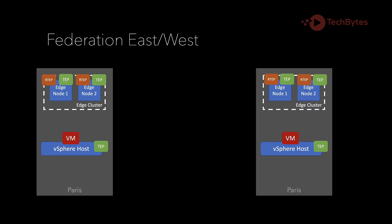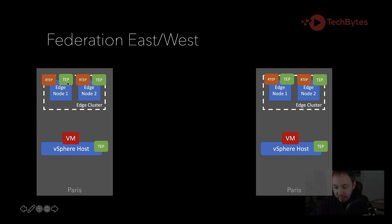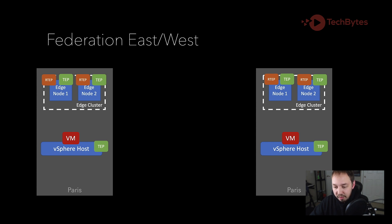Now let's look at what it looks like in a federation deployment. Just to get our bearings here, I've mistakenly put two locations with the same name — they both say Paris — so let's just pretend this one is something different. We have an edge cluster at both sites, we have a TEP IP for each edge node, and we have something new called an RTEP, or remote tunnel endpoint. We've got one of these for each edge node.